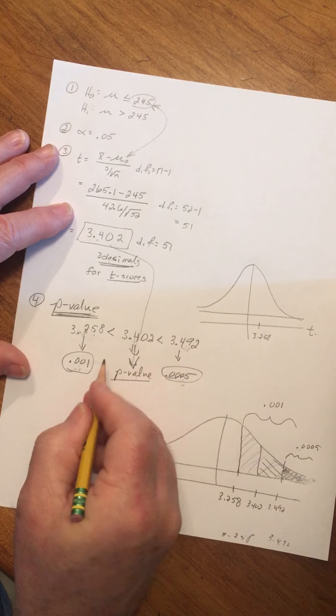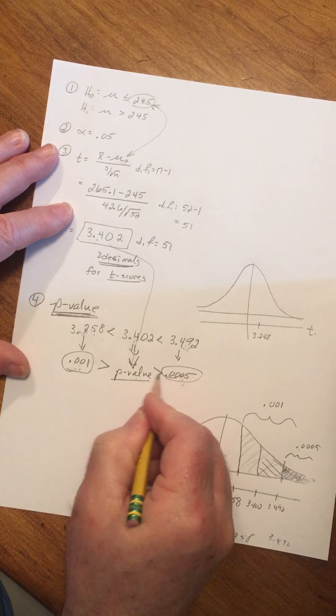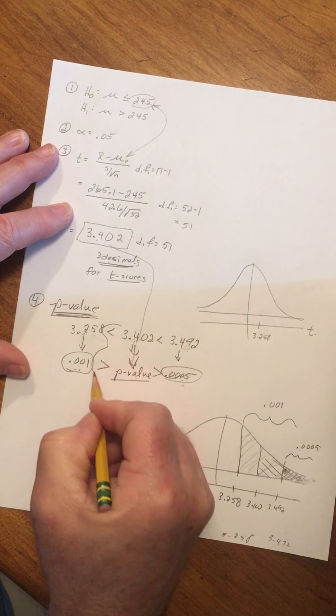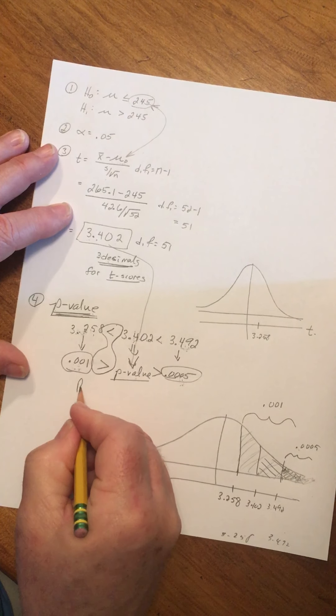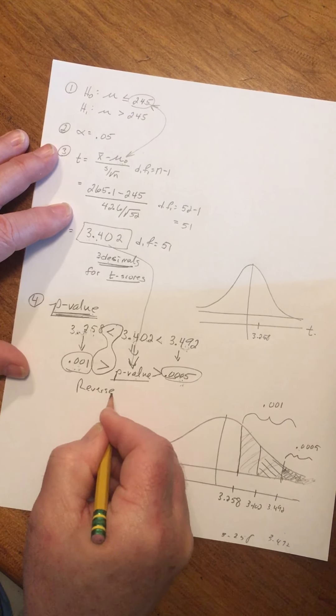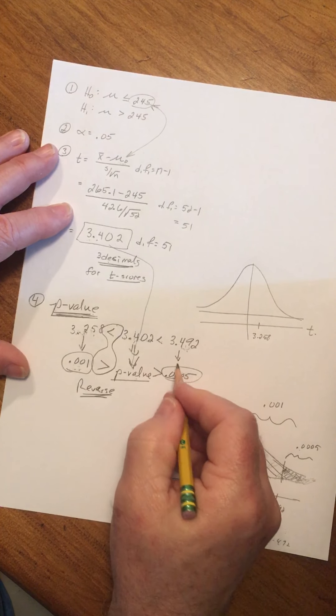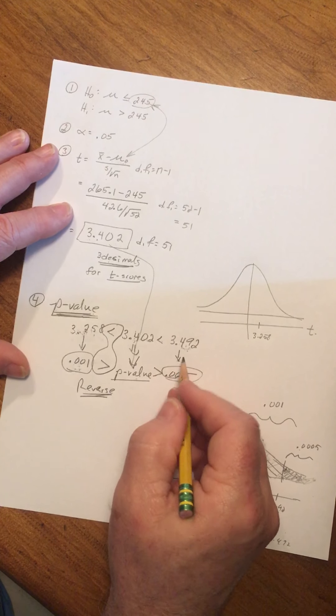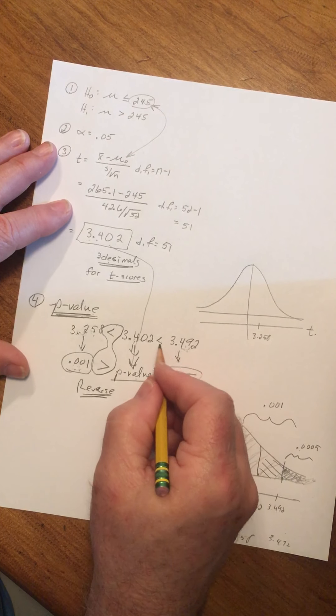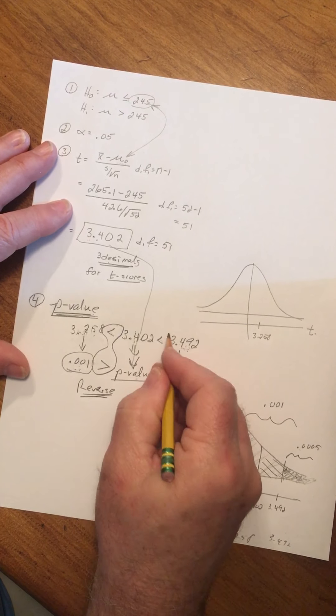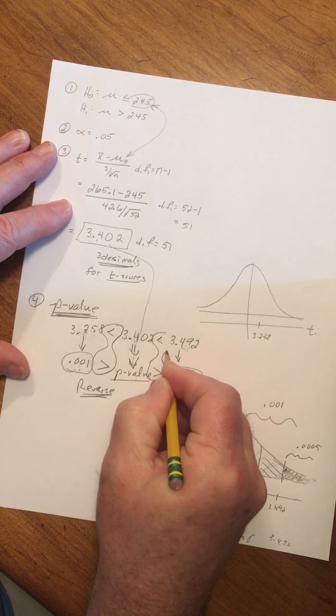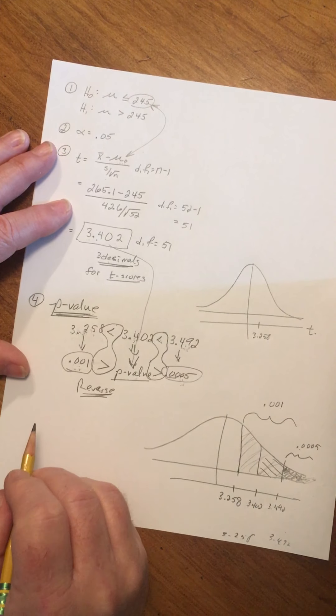This is less than, this is less than, this must be greater than. These get reversed. When you find less than here, this must be greater than. When you find less than here, this must be greater than.